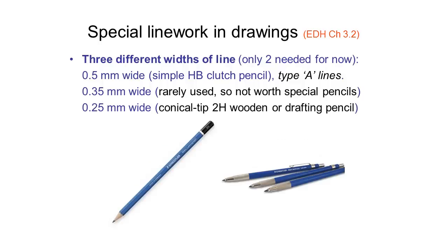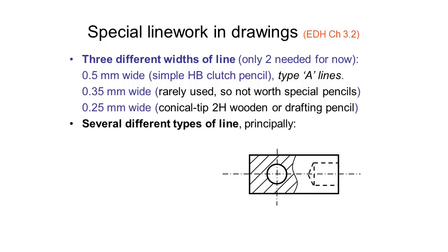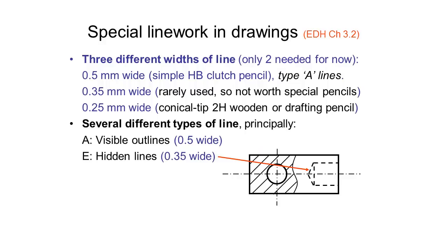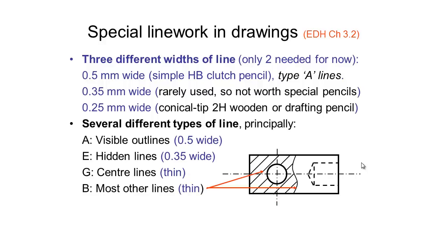We also have a 0.25 millimeter wide line, for which you can use a 2H pencil or special drafting pencils. To illustrate where we use each type: any visible lines in the drawing are Type A lines using 0.5 millimeter wide lines. Hidden lines, which we generally don't like to use, are drawn with 0.35 millimeter wide lines. Center lines and most other lines — such as hatching or section lines — use the thin 0.25 millimeter wide lines.